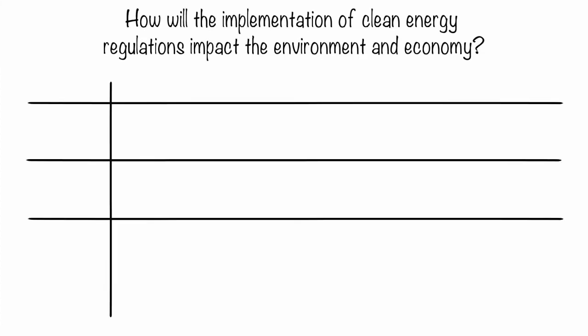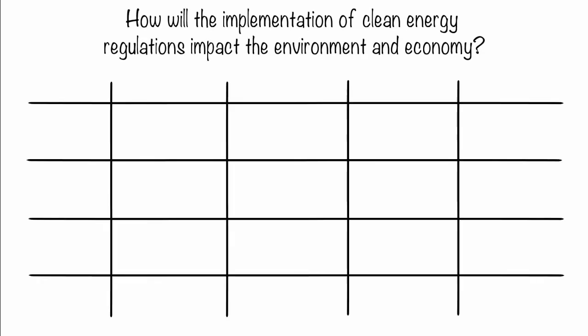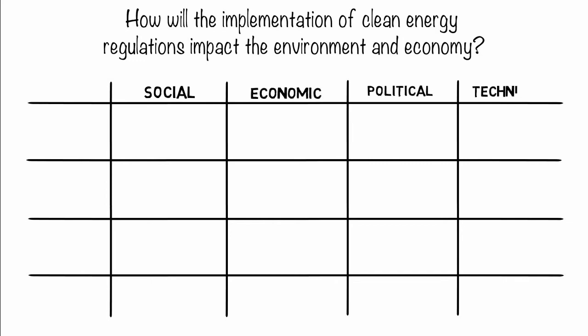Draw a 5x4 grid and label the columns with the four main realms of your research, and the rows with question, narrow, and broad. Next, analyze your question and categorize its keywords.